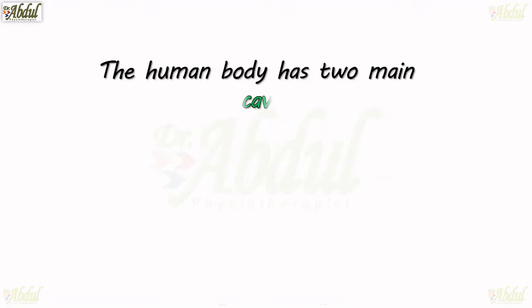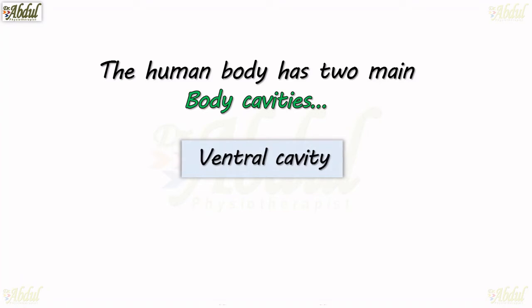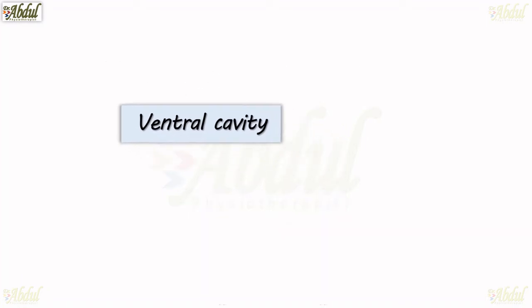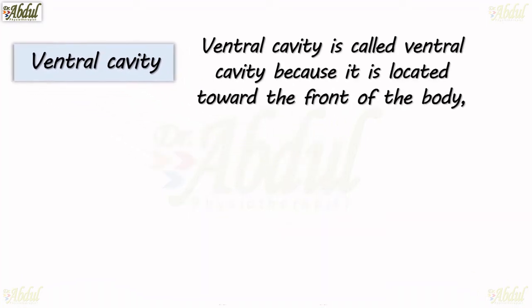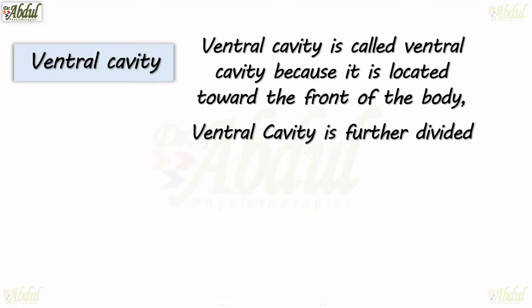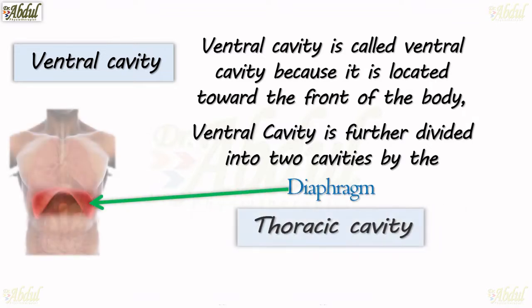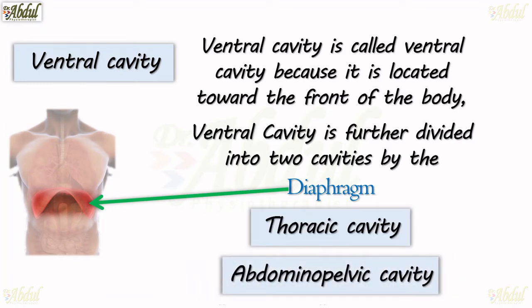The human body has two main body cavities: one is the ventral cavity and the other is the dorsal cavity. The ventral cavity is called ventral because it is located towards the front of the body, and it is further divided into two cavities by the diaphragm — the thoracic cavity and the abdominopelvic cavity.